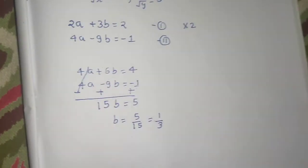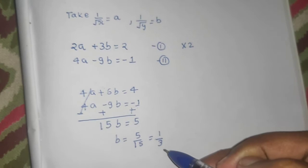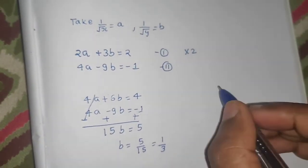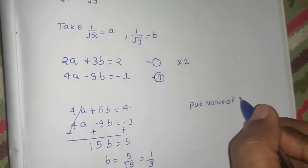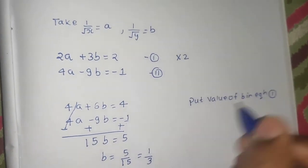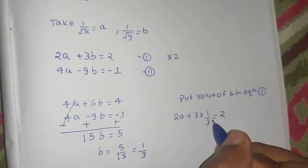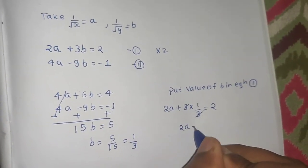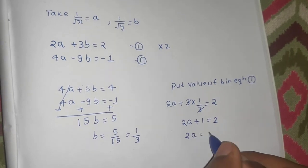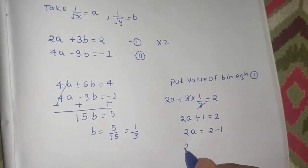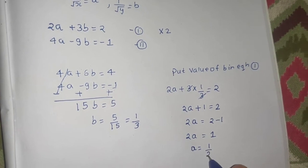Now substitute the value of b into equation number one to find 'a'. We get 2a + 3 × (1/3) = 2. The 3 cancels, so 2a + 1 = 2, which gives 2a = 1, and therefore a = 1/2.